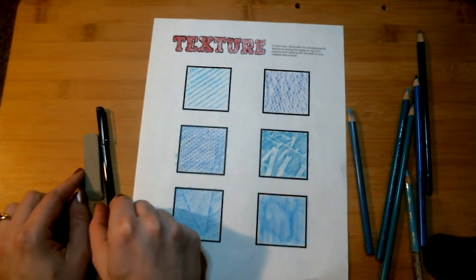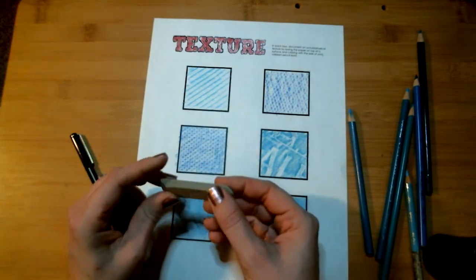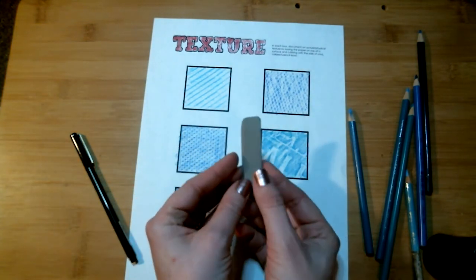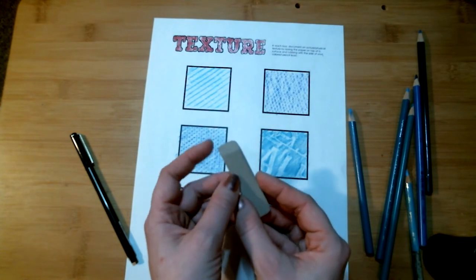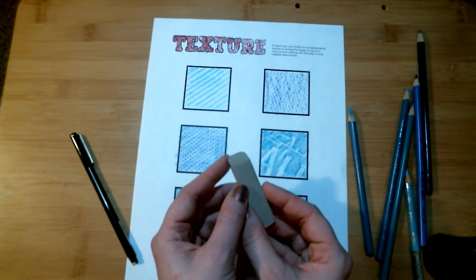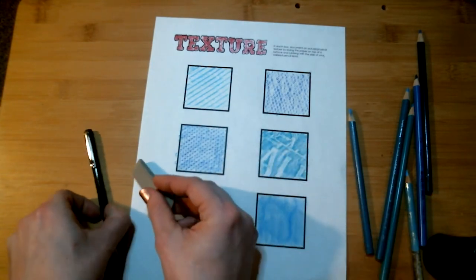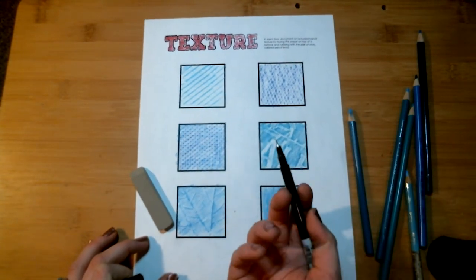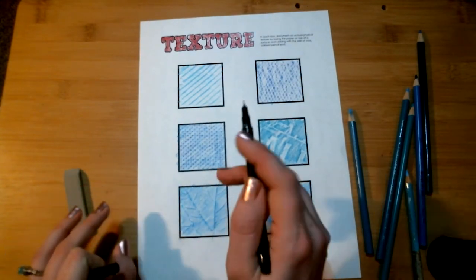And then what I'm going to do is I'm going to take—this is the first time I'm going to be showing you this—this is a sanded eraser, so I'm going to be using this. It really helps with some colored pencil lines to remove any of my mistakes. And then I'm going to label each of my textures with a pen, what they are.